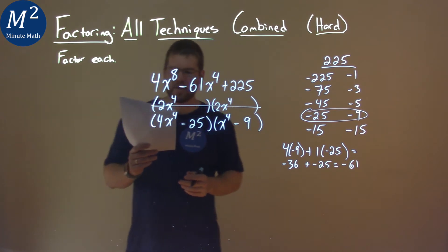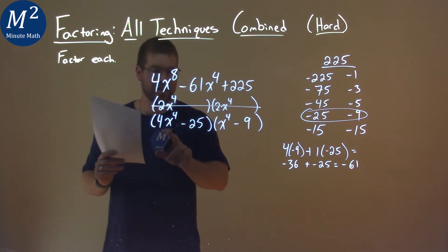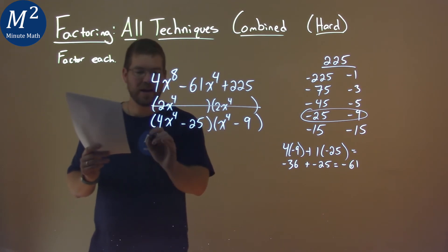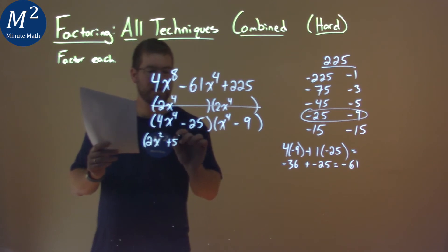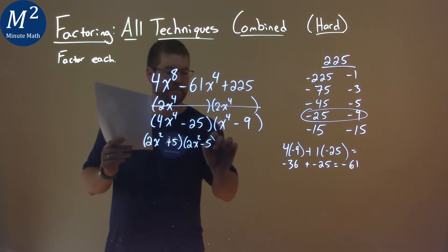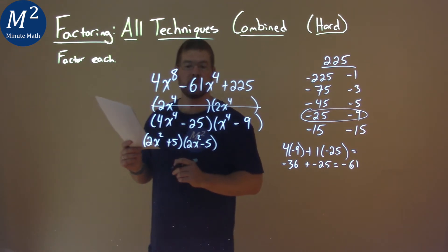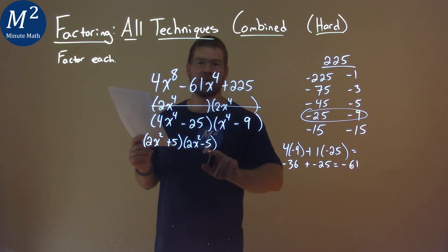Now, can we factor this any more? And the answer is yes. This one here, this first part here, can factor out to be a 2x squared plus 5 and a 2x squared minus a 5. Right? 5 times negative 5 is negative 25. 2x squared times 2x squared is 4x to the 4th. And then 5 plus a negative 5 is 0.